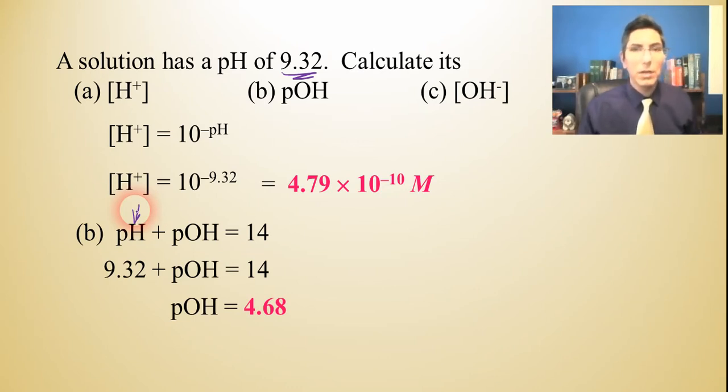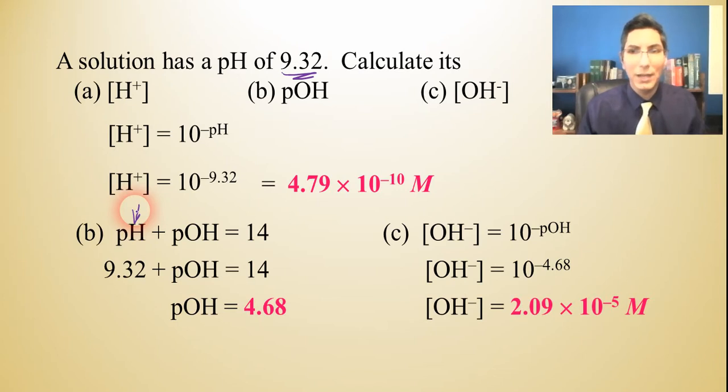Now, once we know pOH, we can figure out the OH- concentration pretty easily. One way we could do this is just take hydroxide equals 10 to the minus pOH power. It works the same way. So we just have to take 10 to the negative 4.68, and we find that that's equal to 2.09 times 10 to the negative 5th.